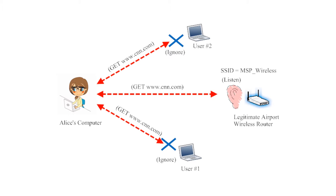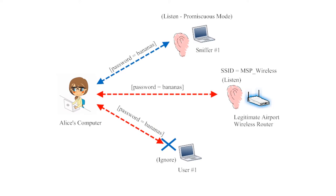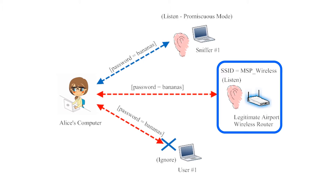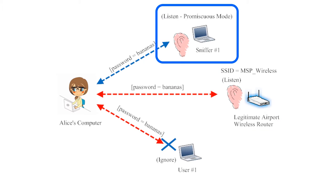User 1 and User 2 are configured to ignore Alice's computer's Wi-Fi traffic. Here's an illustration showing the same situation, only one computer has been configured into promiscuous mode. When Alice submits her password — which is the word 'bananas' — to the website she's trying to log into, her password information is available to every device on the wireless network. User 1 is still ignoring this information, as expected. The router is still listening, as it should. But User 2 has now turned into Sniffer 1, secretly observing Alice's login credentials.